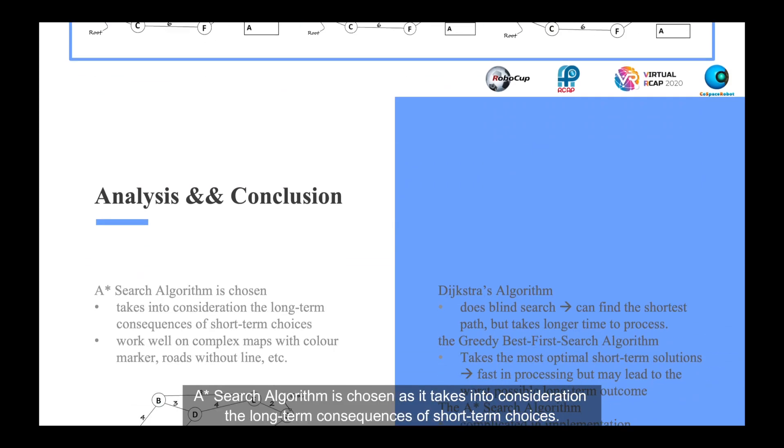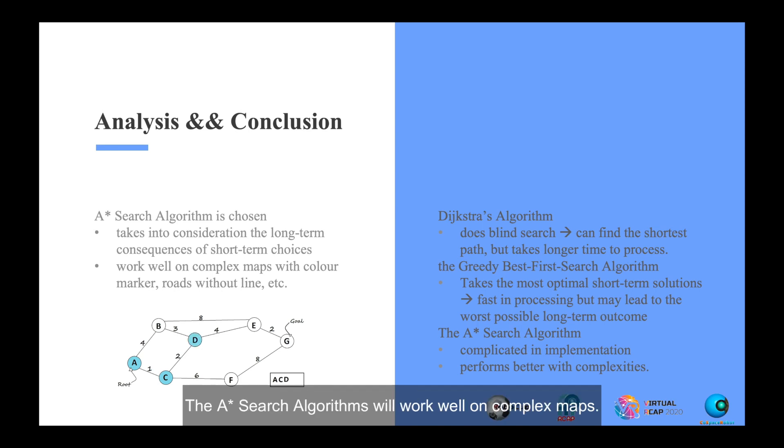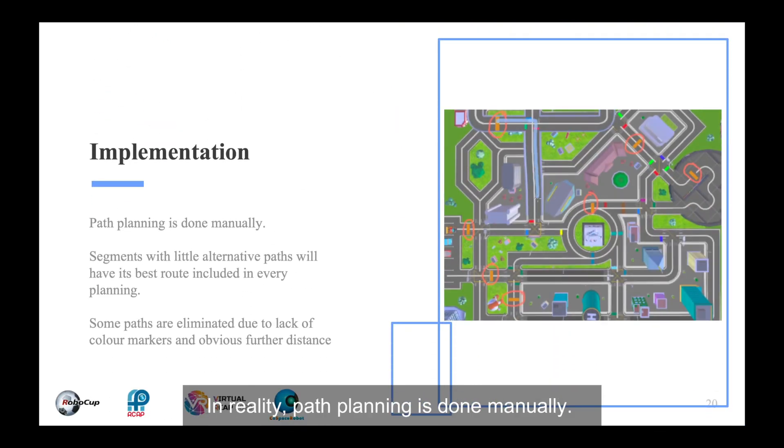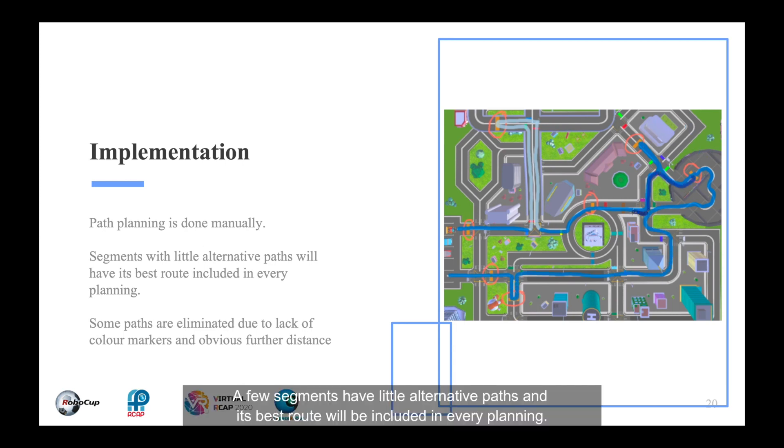A-star search algorithm is chosen as it takes into consideration the long-term consequences of short-term choices. The A-star search algorithm will work well on complex maps. In reality, path planning is done manually. Every step is selected based on an overall evaluation of how far the next node is from both the starting point and the finishing point. A few segments have little alternative paths and their best roads will be included in every planning.